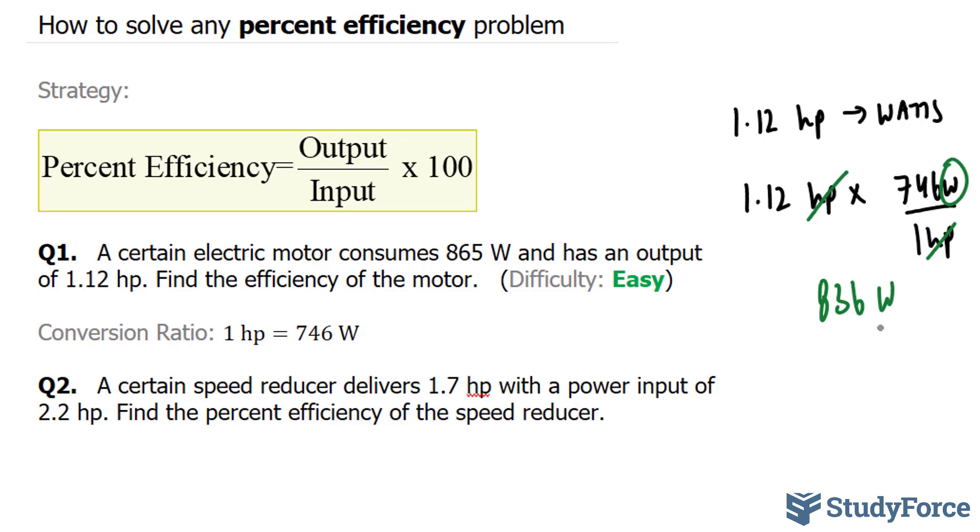836 watts is the same thing as 1.12 horsepower. Now we have to find out if this electrical motor is actually efficient. And to do that, we will use this formula where we have output over input times 100 gives us the percent efficiency.